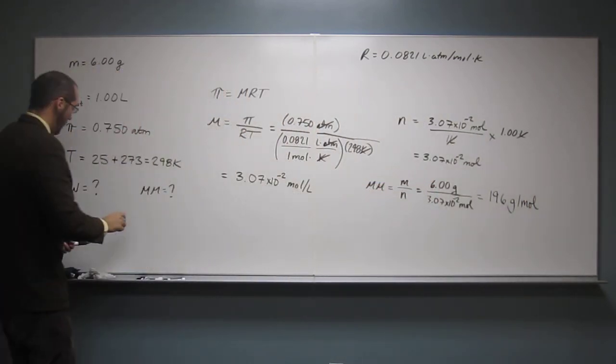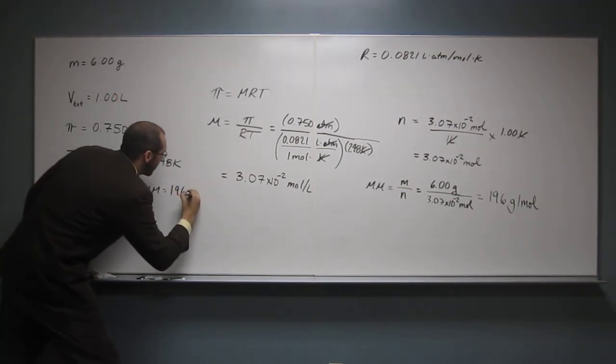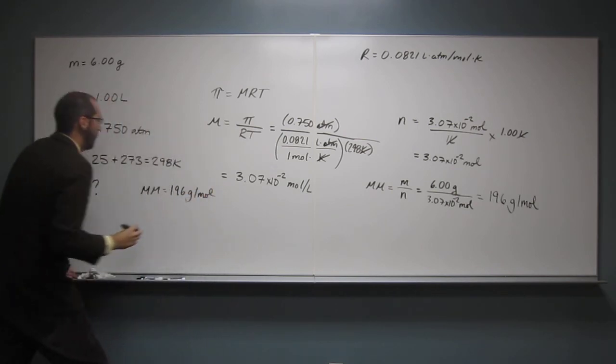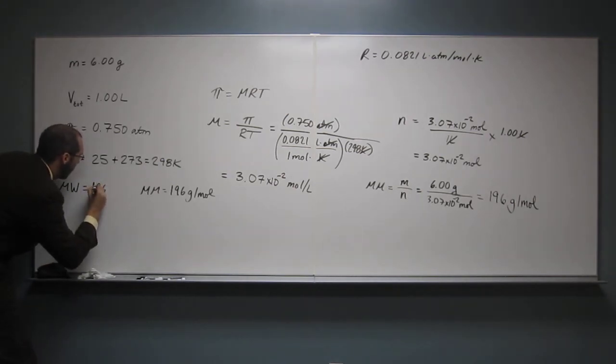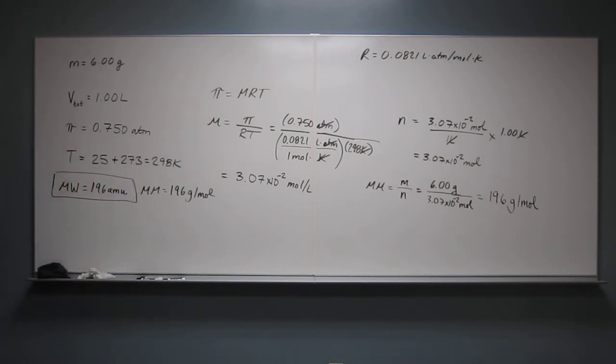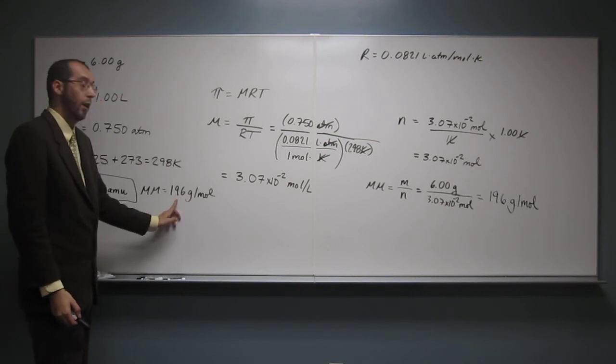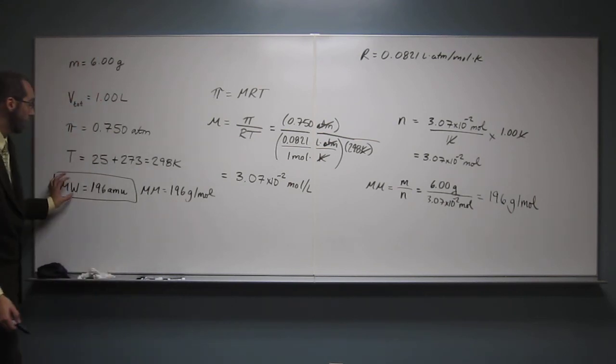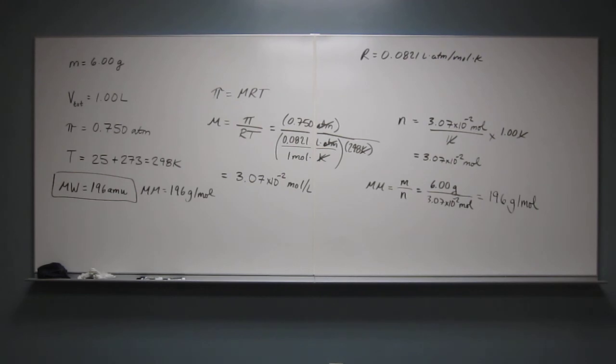And it asks us for the molecular weight. So the molar mass is 196 grams per mole. That means the molecular weight is 196 amu. Okay, so remember to make that distinction between molar mass and molecular weight. Okay, because this is the mass of one mole of this substance. That weighs 196 grams. But one molecule weighs 196 amu. Is everybody okay with that? Yes. Questions? Question on that?